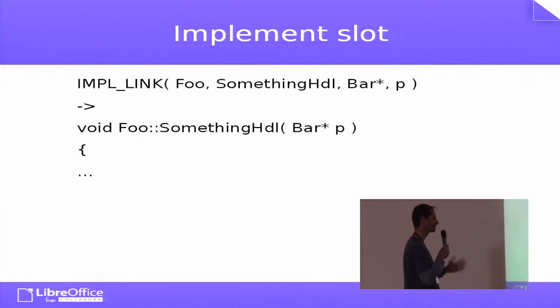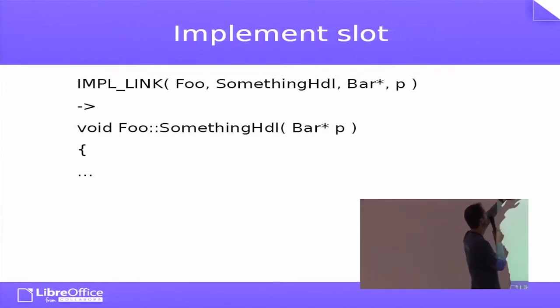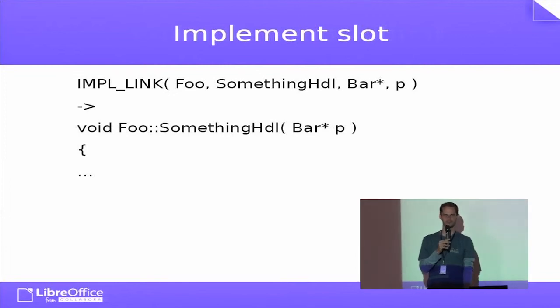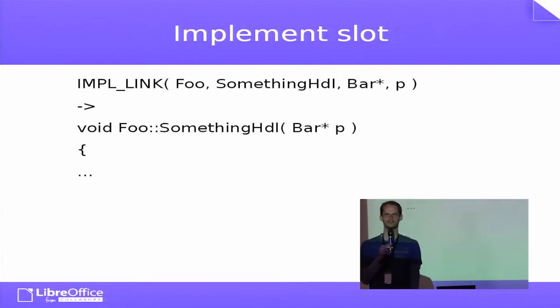And this is how you implement the function. So again, you had some macro—it was IMPL_LINK. This is what the handler was called, there was the argument, and it was called this. And now it's again just a function.